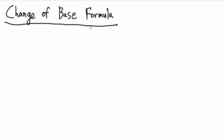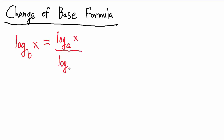In this video we're going to talk about an important formula called the change of base formula. It's very useful in that it lets you take any logarithm and convert it to a logarithm in any other base that you want. So if we have the base B logarithm of X, the change of base formula tells us that this equals the base A log of X divided by the base A log of B, where B and A are any valid bases and X is anything allowed inside a log.